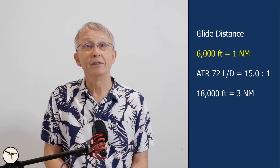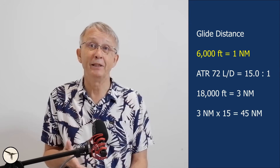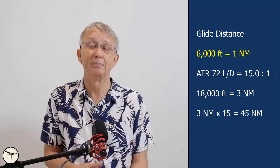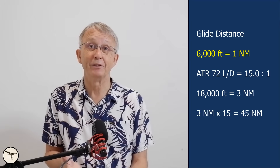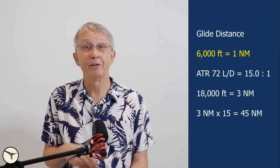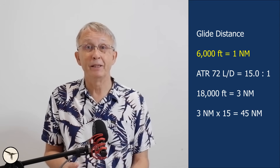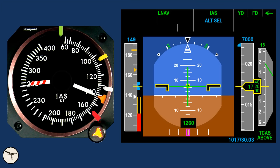For example, 18,000 feet divided by 6,000 equals 3 nautical miles of altitude; 3 multiplied by 15 equals 45 nautical miles of glide distance. Keep in mind: wind matters — tailwind increases your range, headwind reduces it. Weight doesn't affect glide distance, but it does influence your optimum glide speed. For ATR aircraft, the best glide speed is Vref plus 10 knots with flaps retracted in normal atmospheric conditions. In icing conditions, glide performance worsens due to increased drag and a higher minimum speed.